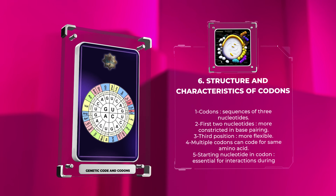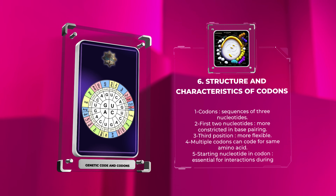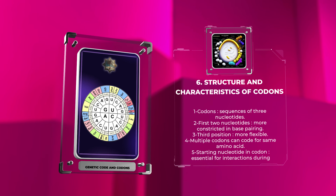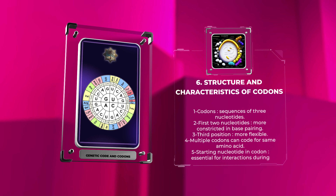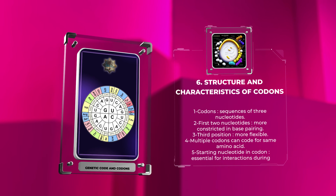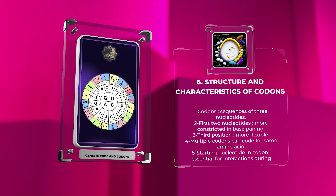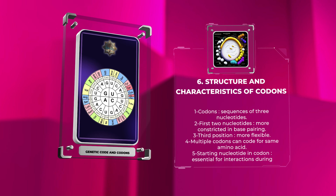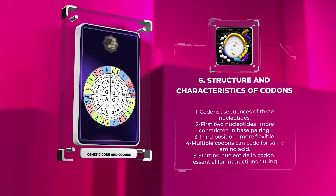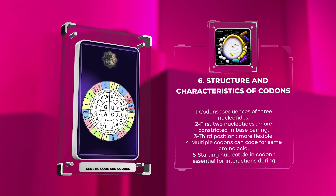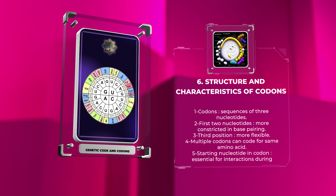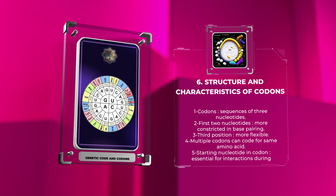The first two nucleotides are more constrained in base pairing, while the third position is more flexible. Multiple codons can code for the same amino acid, contributing to redundancy. The starting nucleotide in a codon is essential for interactions between tRNA molecules and mRNA codons during translation.